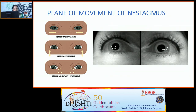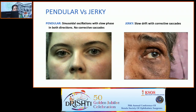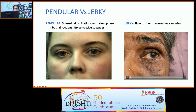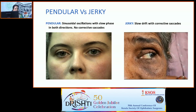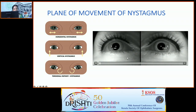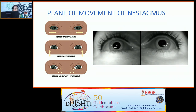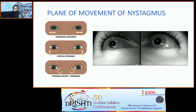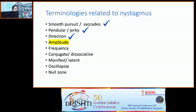Pendular nystagmus is a sinusoidal oscillation with equal movement in both directions and no corrective saccade, so the direction is either horizontal or vertical. Jerky nystagmus has slow drift in one direction with a corrective saccade. The plane of movement can be horizontal, vertical, or rotatory/torsional. Amplitude of nystagmus is the excursion of eye movement: large means more than 15 degrees, moderate is 5–15 degrees, fine is less than 5 degrees. Frequency is the number of to-and-fro movements per second: slow is 1–2 per second, medium 3–4 per second, fast is more than 5 per second.